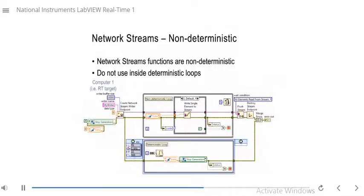An important point: network stream functions are non-deterministic. Because they communicate over the network, there can be network delays, making them inherently non-deterministic. Therefore, you should never use network stream functions inside a deterministic loop. In this example, the RT target's deterministic loop contains only deterministic code, such as a control algorithm or data generation, while the non-deterministic loop at the top is where the network stream write functions are placed.